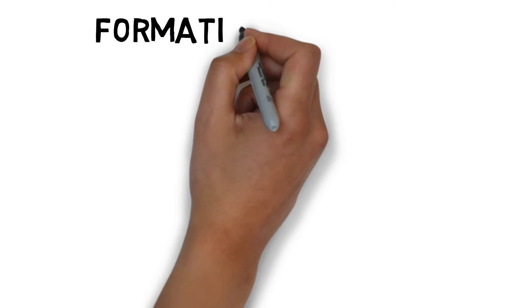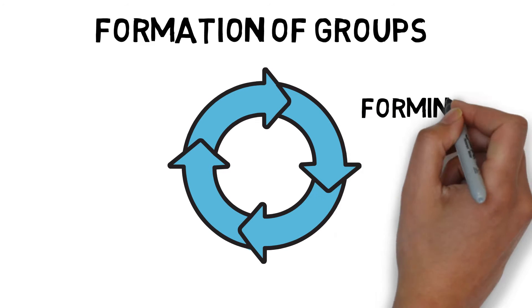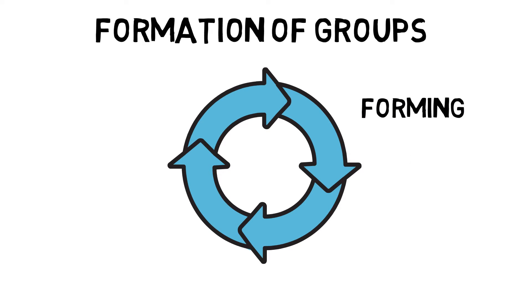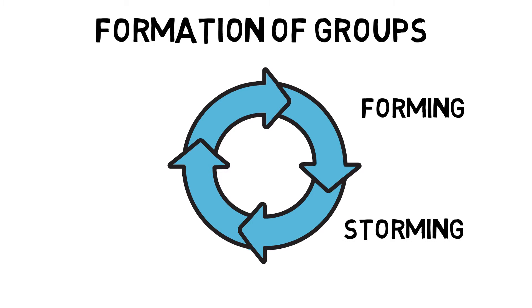Tuckman's model suggests that there are four stages to the formation of groups. Forming, in which members get to know each other and develop roles. Storming is where conflict between members occurs and individuals try to establish their positions. It is important that the coach drives the group through this stage.